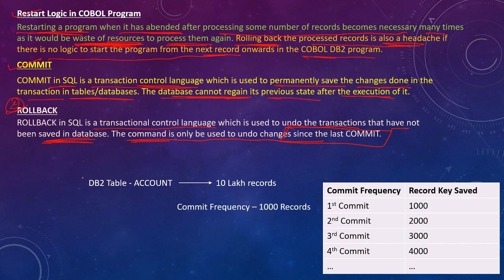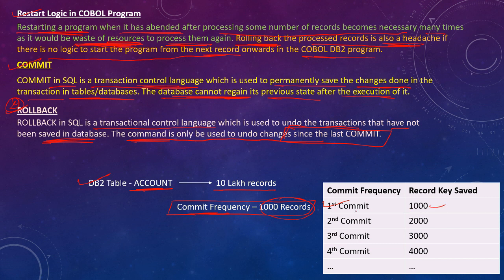For example, we have one DB2 table — account — with 10 lakh records, and we are committing the data after each 1000 records. So the commit frequency is 1000 records. The first commit is at 1000 records, the second at 2000, the third at 3000, and the fourth at 4000. Consider our job is abandoned at the 4200th record.